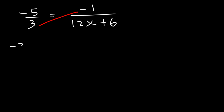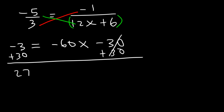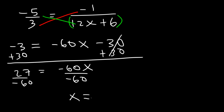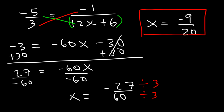Now let's cross-multiply. 3 times negative 1 is negative 3. Negative 5 times (12x plus 6): distribute to get negative 60x minus 30. Add 30 to both sides: negative 3 plus 30 is 27, equal to negative 60x. Divide both sides by negative 60: we get 27 over negative 60, which reduces — both are divisible by 3. Negative 27 divided by 3 is negative 9, and 60 divided by 3 is 20. So x is equal to negative 9 over 20.